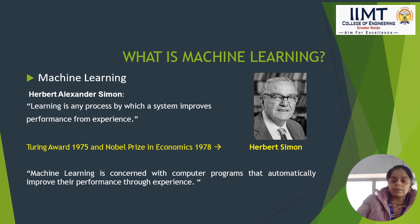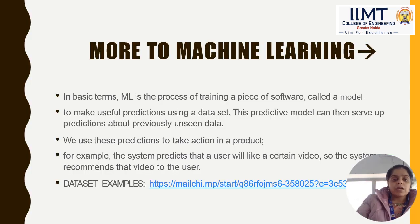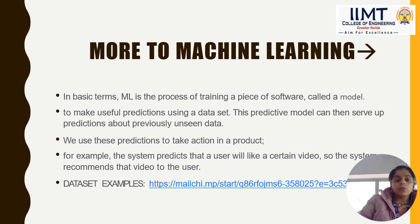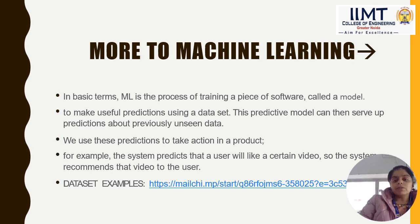In basic terms, machine learning is the process of training a piece of software — called a model — to make useful predictions using a data set. The predictive model can then serve up predictions about previously unseen data, and we use these predictions to take action in a product. For example, the system predicts that a user will like a certain video, so the system recommends that video to the user.